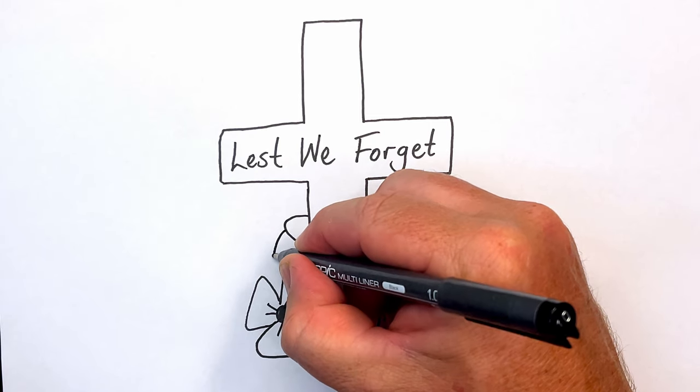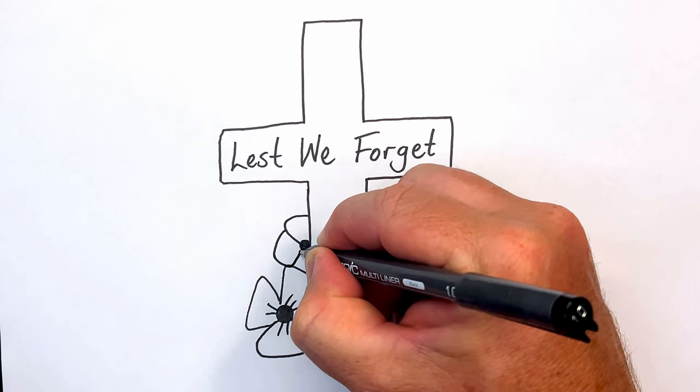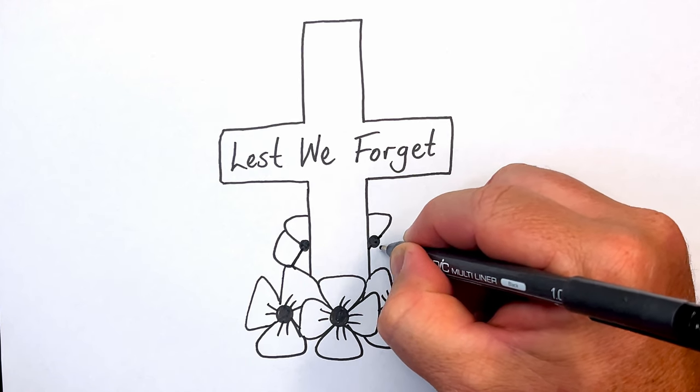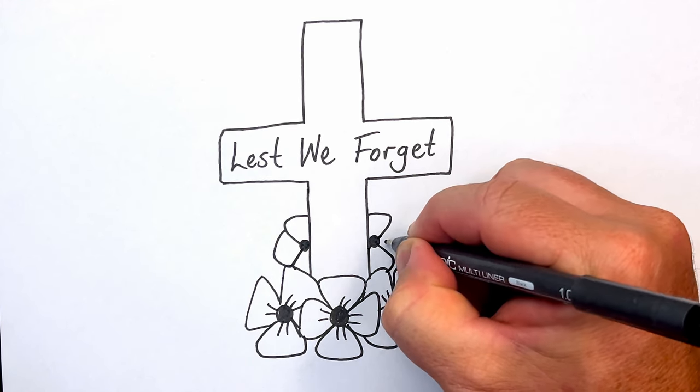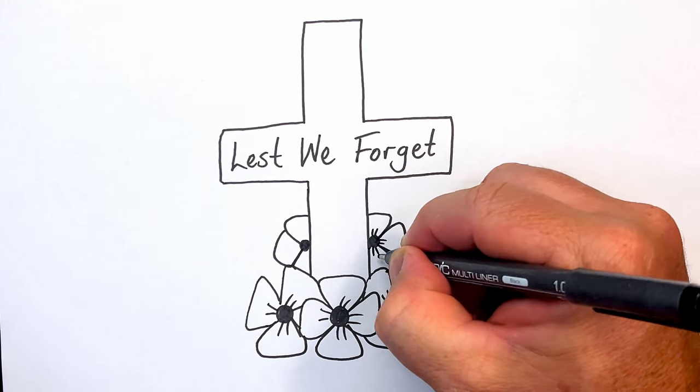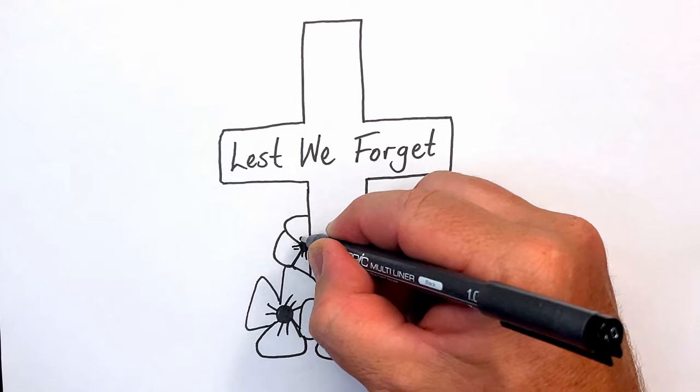Now these poppies are going to be smaller because they're further back. They're going to be behind the cross and also behind the other poppies. You can see here that you can only see three petals on each of those poppies.